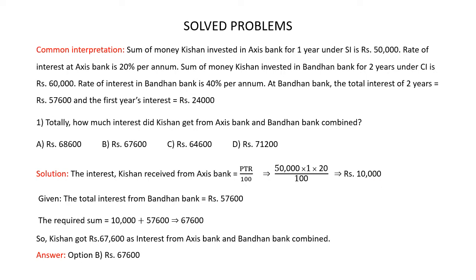Also, it's given that the total interest Kishan got from Bandhan Bank is Rs 57,600. So the required sum is 10,000 plus 57,600, which is 67,600. Totally, Kishan got Rs 67,600 as interest from Axis Bank and Bandhan Bank combined. The correct answer is option B, Rs 67,600.